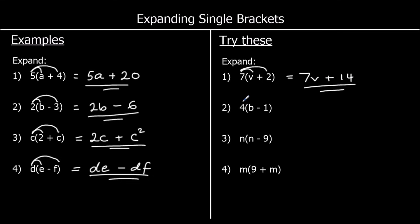The second one: 4 times b is 4b. And positive 4 times a negative 1 is negative, and 4 times 1 is 4. So 4b minus 4.